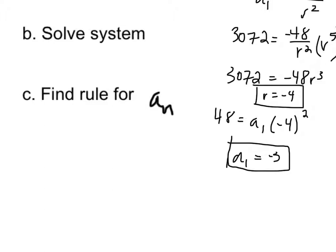We're going to find a rule for a sub n by using our newly found r and a sub 1 values. So negative 3 times negative 4 to the n minus 1. This is our a sub n equation.